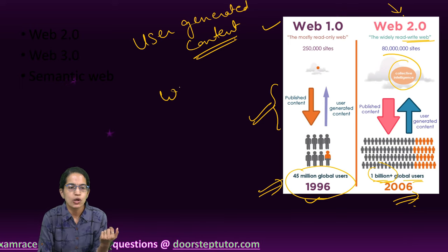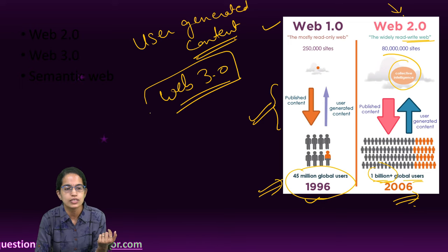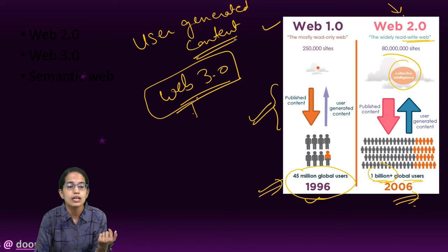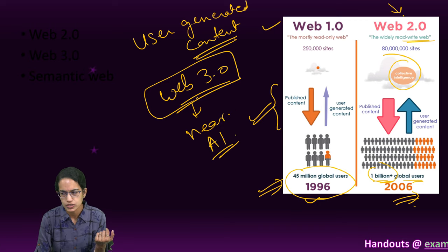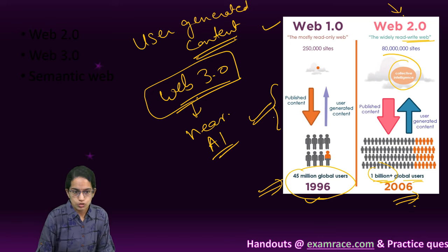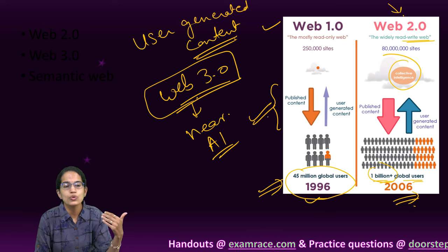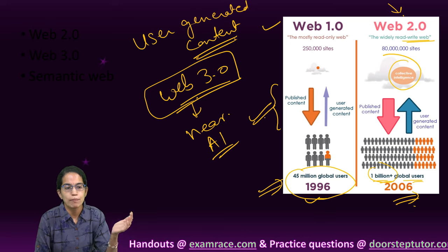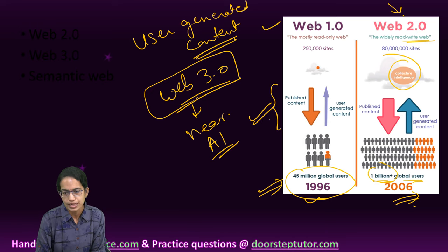Web 3.0 is near-human intelligence. We call this AI-powered systems which run to assist users, and this is a new development in web technologies and the internet paradigm.